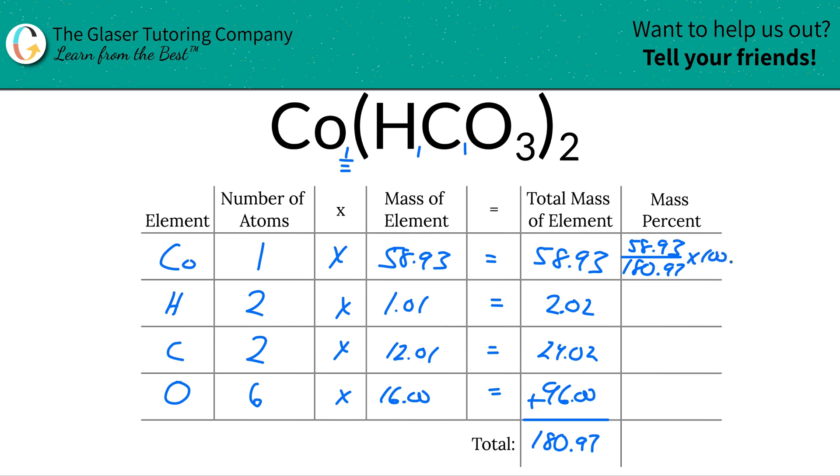And then you're going to take that fraction and multiply it by 100. This is a simple percent, part over whole times 100. So now when you do that math out, the percentage here works out to be about 32.56%. I'll round there to two decimal places.